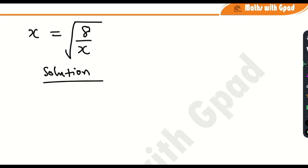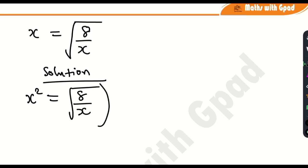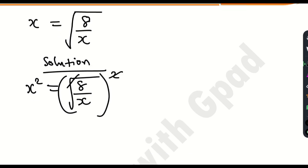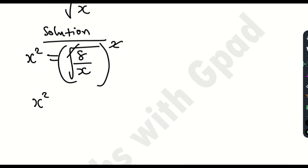The first thing we'll do is apply square to both sides. The reason for that is to get rid of the square root. Squaring both sides, I'm going to have x squared is equal to 8 over x with the square root, all squared. This square will cancel the square root, and I have x squared is equal to 8 over x.